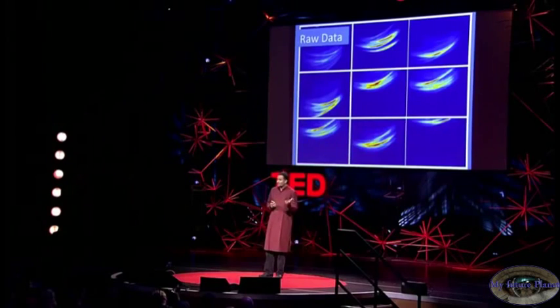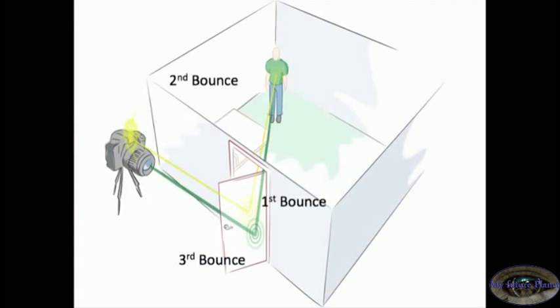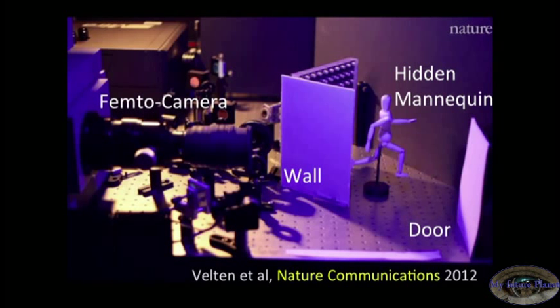So Superman can fly. Some other heroes can become invisible. But what about a new power for a future superhero to see around corners? The idea is that we're going to shine some light on the door. It's going to bounce, go inside the room. Some of them are going to reflect back on the door and then back to the camera. And we're going to exploit this multiple bounces of light. And it's not science fiction. We have actually built it. On the left, you see our femto camera. There's a mannequin hidden behind a wall. And we're going to bounce light off the door.